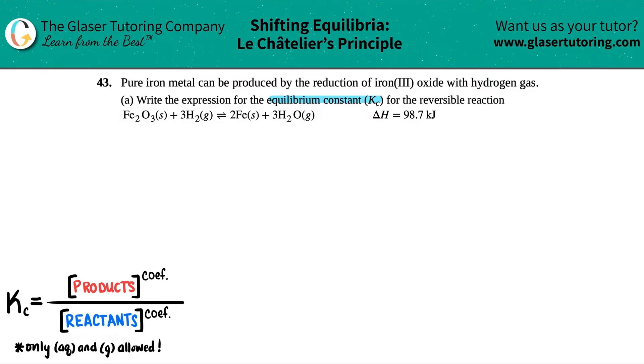So in this case we have Fe2O3 and that's a solid, right? This is coming together with three H2 gases, and they come to equilibrium. I see this double arrow with two Fe solid and then three H2O gases. Beautiful.